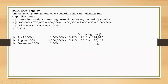And lastly, from 1st December — that is one month. Take $1.8 million, multiply by the capitalization rate of 10.22%, then take 1/12, and you obtain the final figure. After summing all three, the total borrowing costs computed are $215,472.